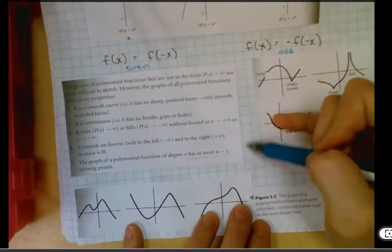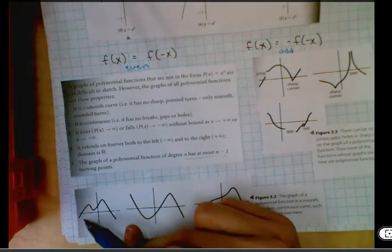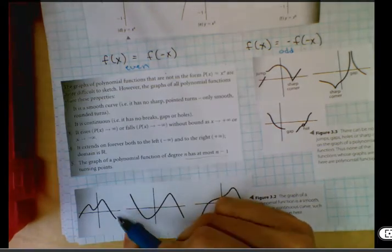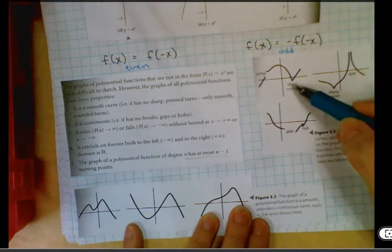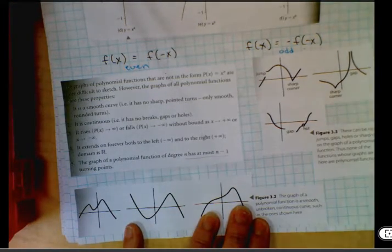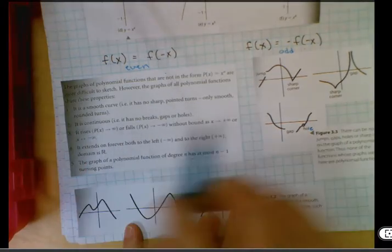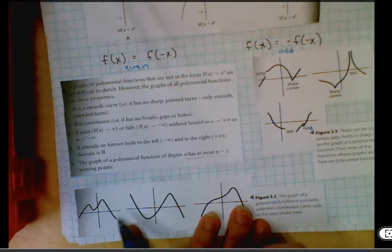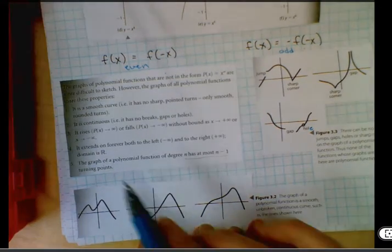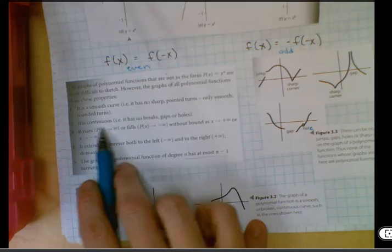Here's some of the features of polynomials. They're smooth, so look at this one, smooth, nice curves. No jumps, no corners, no gaps. Here's a hole. It's supposed to have an e on it. Hole. So these are all non-examples of polynomials, and these are all examples of polynomials. So that's what continuous means.